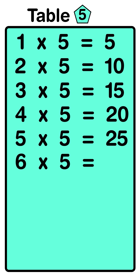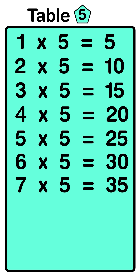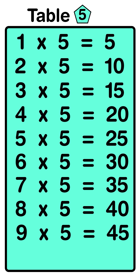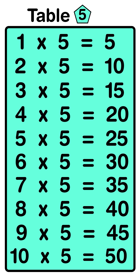Six five's are thirty, seven five's are thirty-five, eight five's are forty, nine five's are forty-five, ten five's are fifty.